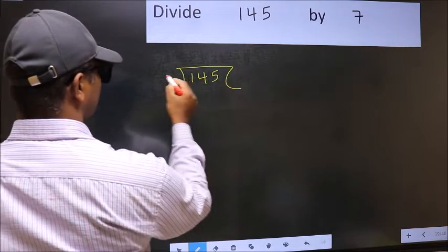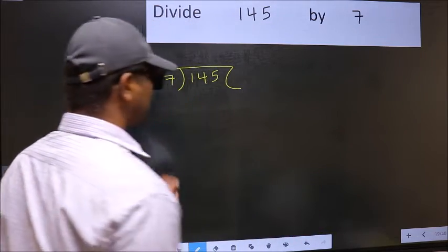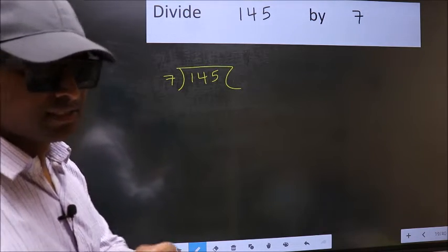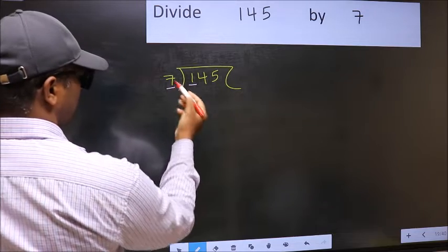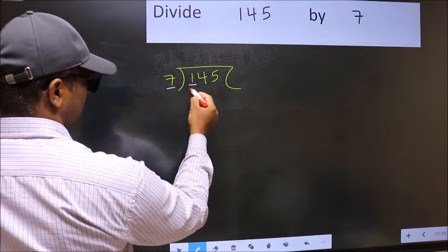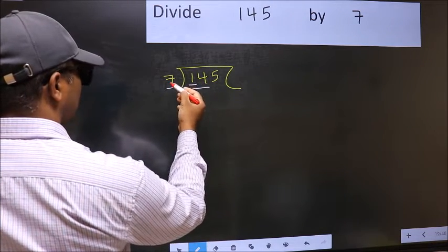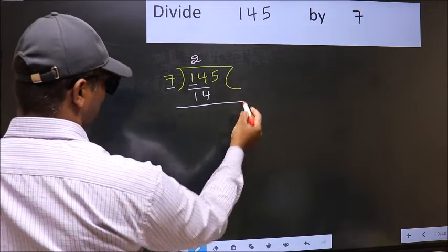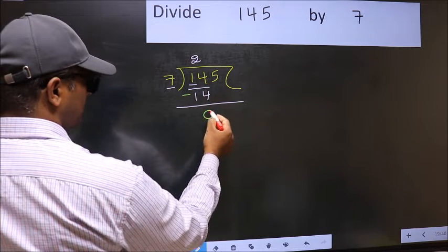145, 7 here. This is your step 1. Next, here we have 1 and here 7. 1 is smaller than 7, so we should take two numbers, 14. When do we get 14 in the 7 table? 7 twos, 14. Now you should subtract. 14 minus 14, 0.